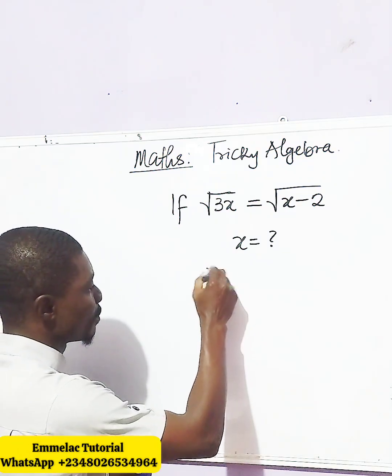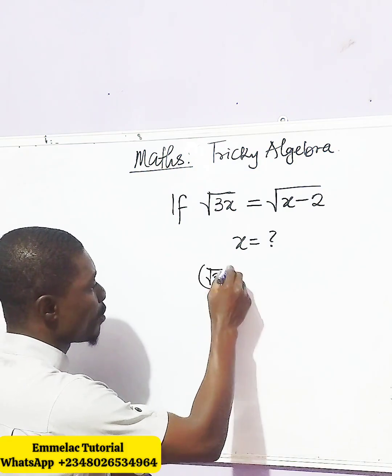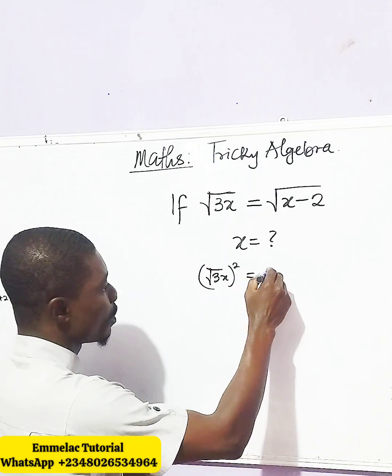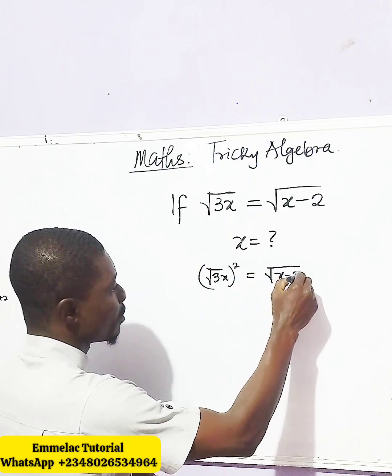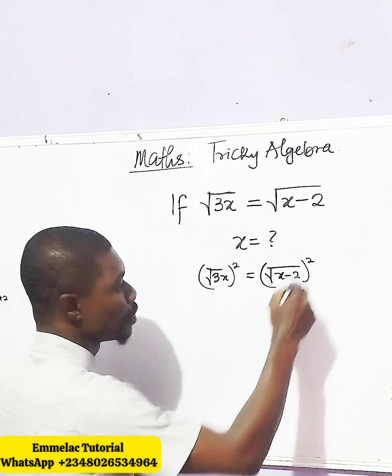So here we have the square root of 3x to the power of 2, equals the square root of x minus 2 to the power of 2.